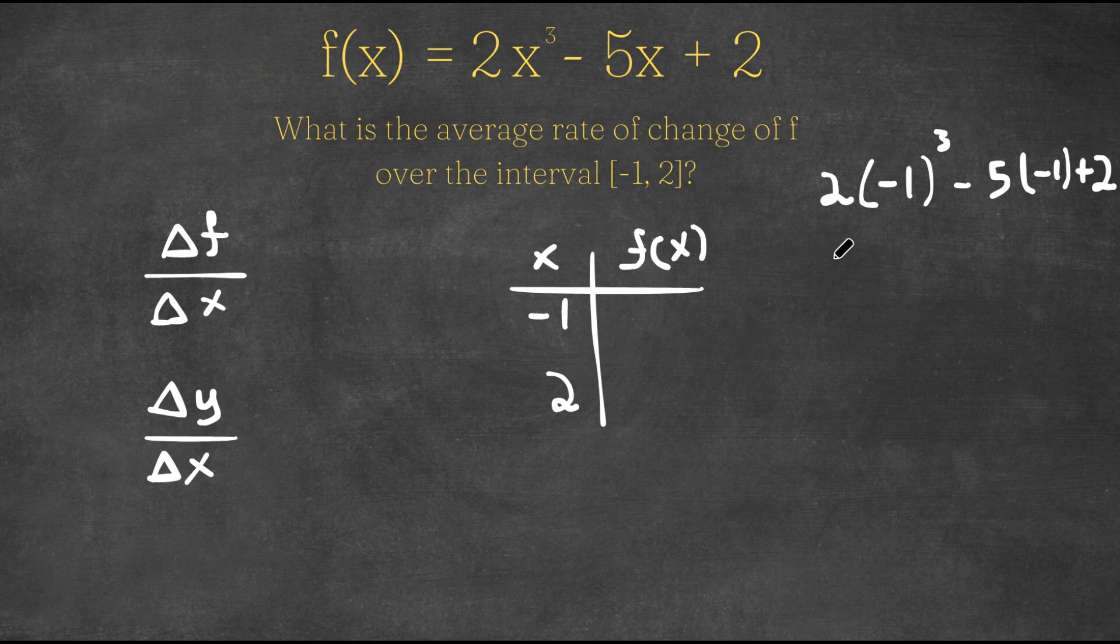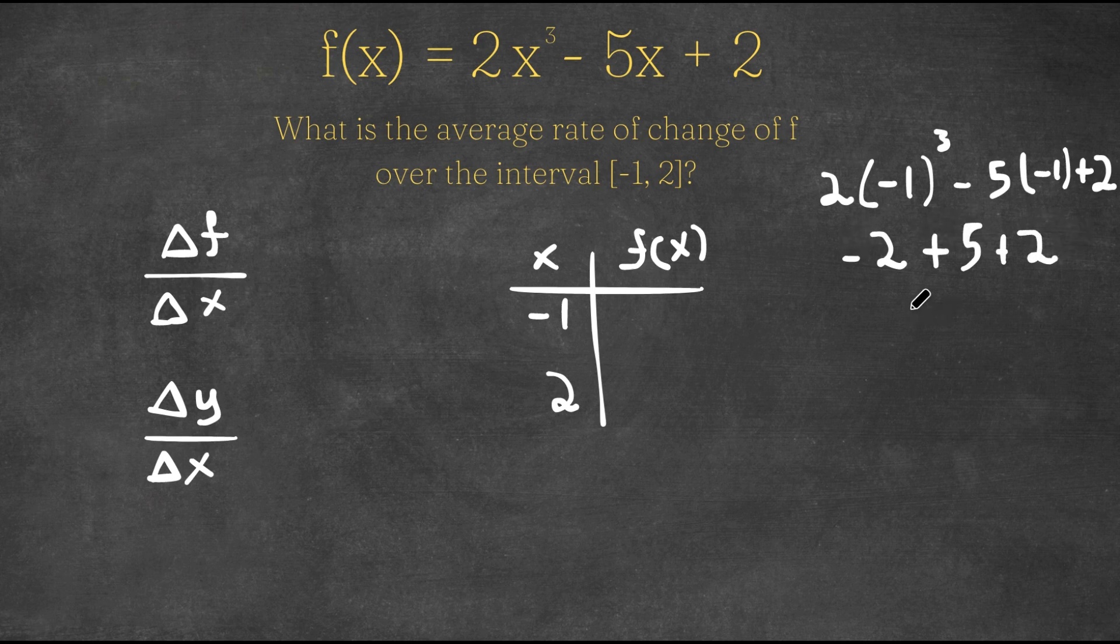So this is going to be 2 times negative 1, which is negative 2, minus 5 times negative 1 is positive 5. So this is actually a plus sign and we have our plus 2. Now, negative 2 plus 5 is 3 and 3 plus 2 is 5. So this would simply be 5. So f of x for x equal to negative 1 is 5.